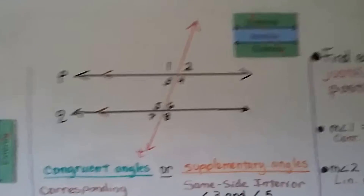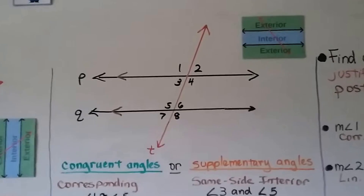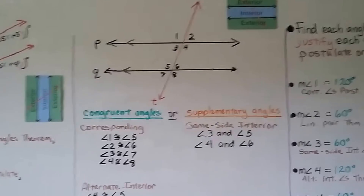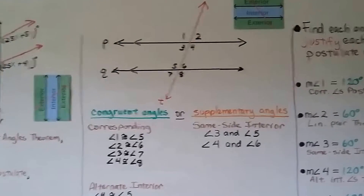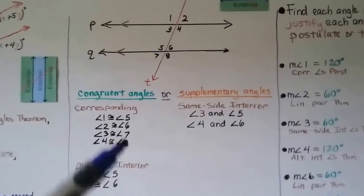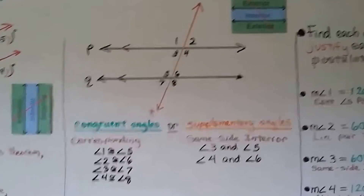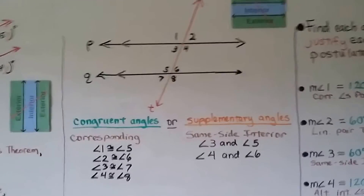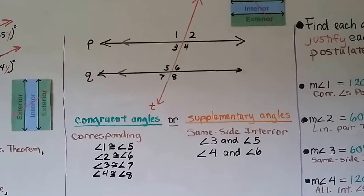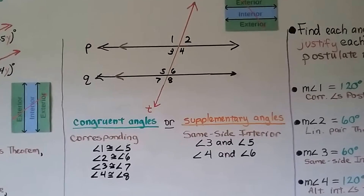Here we've got some more parallel lines. Lines P and Q are parallel, with T as our red transversal, giving us 8 angles. We can split these into which are congruent and which are supplementary. The corresponding angles are: angles 1 and 5, angles 2 and 6, angles 3 and 7, and angles 4 and 8. The alternate interior angles are angles 4 and 5, and angles 3 and 6.